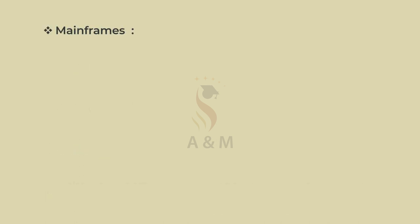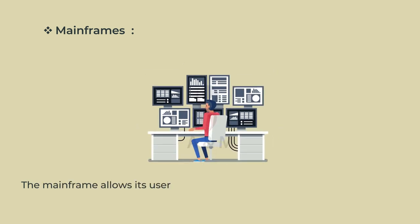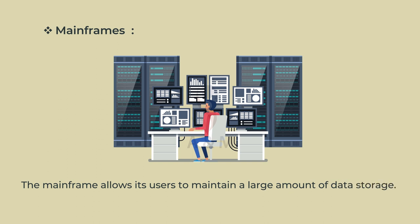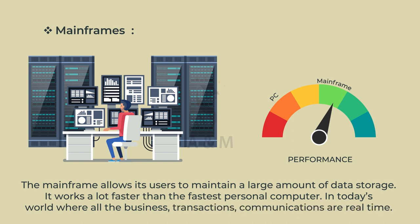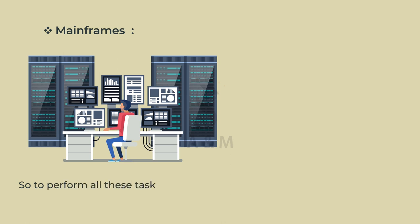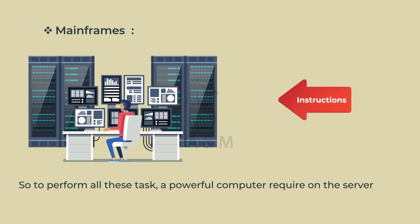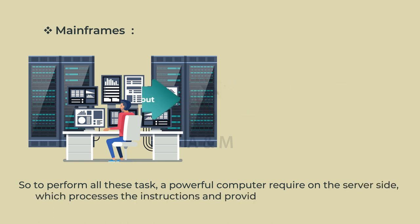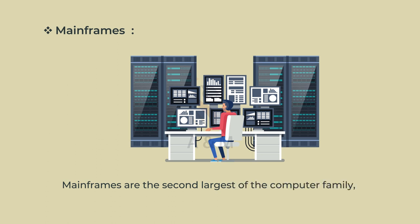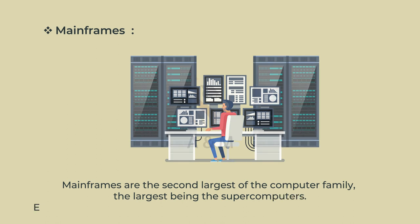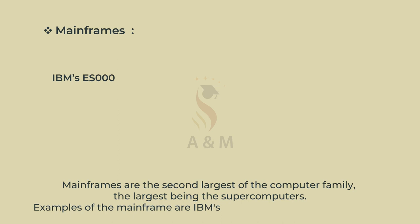Third is Mainframes. The Mainframe allows its users to maintain a large amount of data storage. It works a lot faster than the fastest personal computer. In today's world, where all the business transactions and communications are real-time, a powerful computer is required on the server side, which processes the instructions and provides the output in seconds. Mainframes are the second largest of the computer family, the largest being the supercomputers. Examples of mainframes are IBM's ES000, VAX 8000 and CDC 6600.